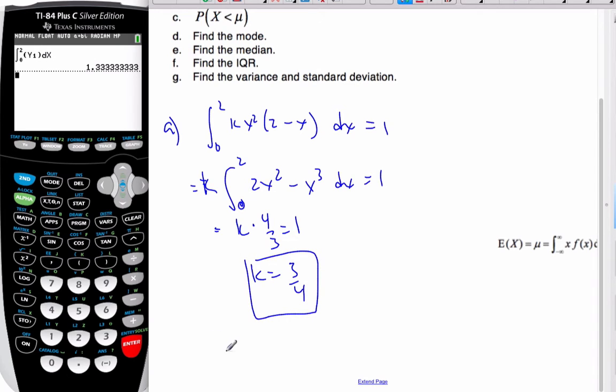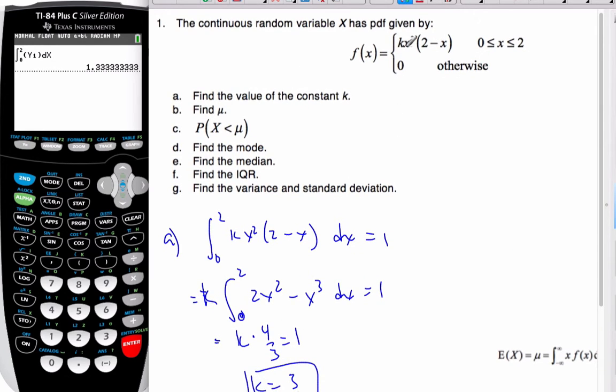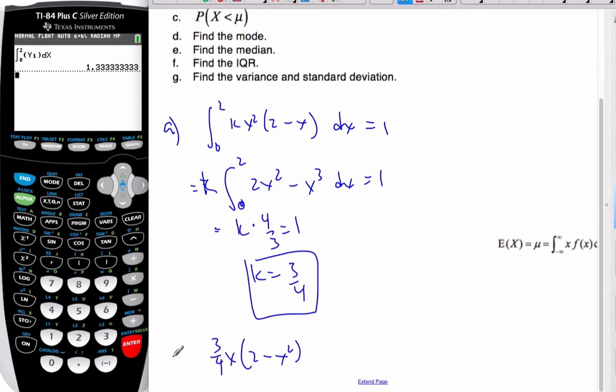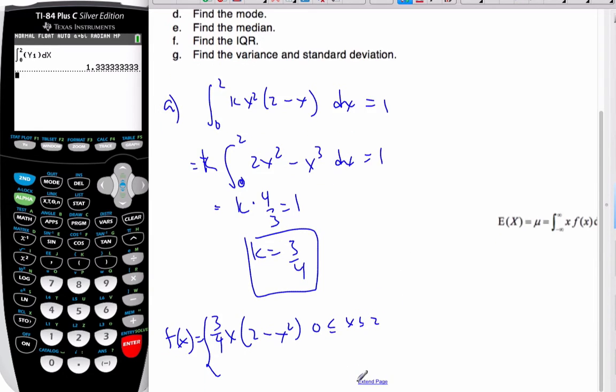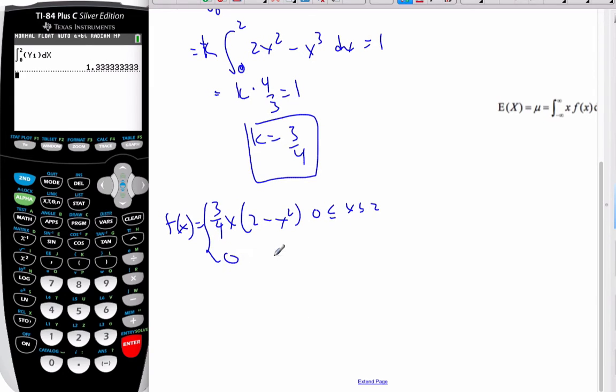And so my probability generating function is going to be 3 quarters x (2 - x) squared, which comes from right here. So there's my probability generating function f of x is equal to this when it's 0 to 2, and it's 0 otherwise.